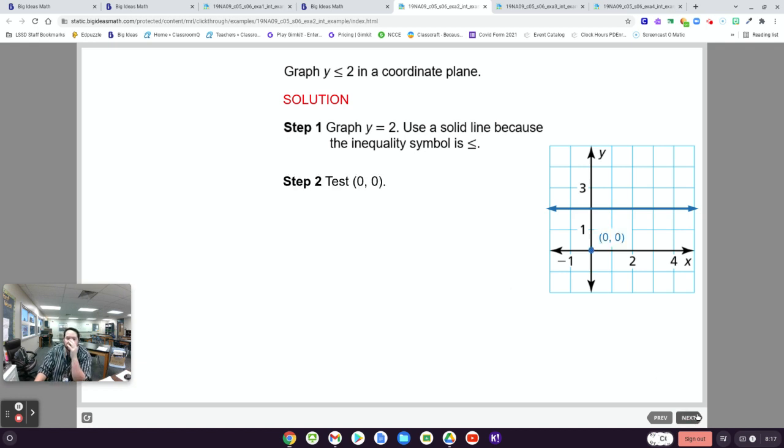The other way, a good method, is you pick a point. Like 0, 0 is an easy one. And it's down here. So if you plug in 0 for x and y, and there is no x, so 0 for y, and it's true, it means you shade that side of the line where 0, 0 is. If you plugged in 0, 0, and it was false, then you would shade the other side of the line.